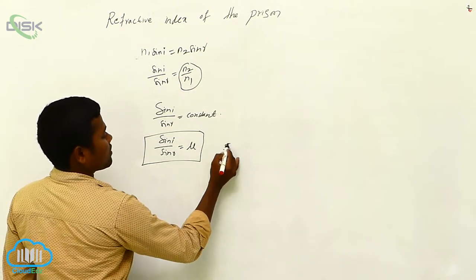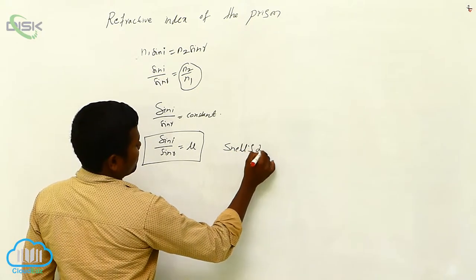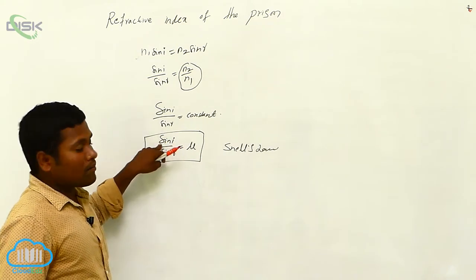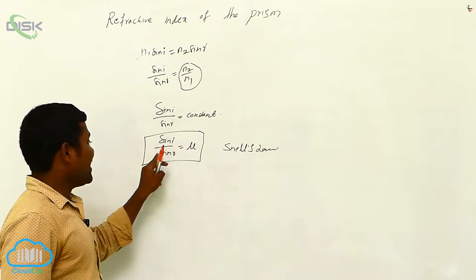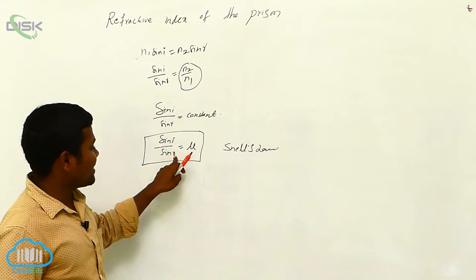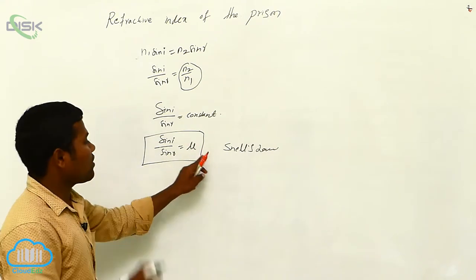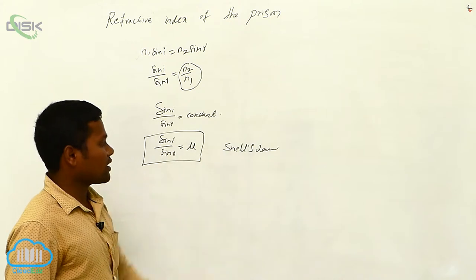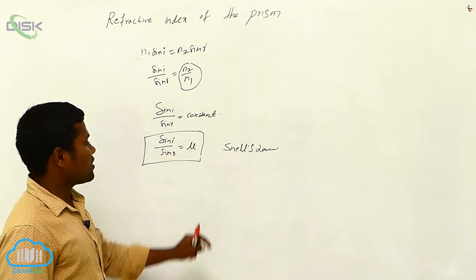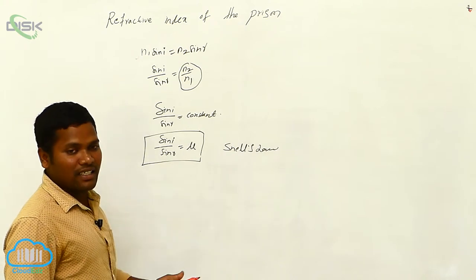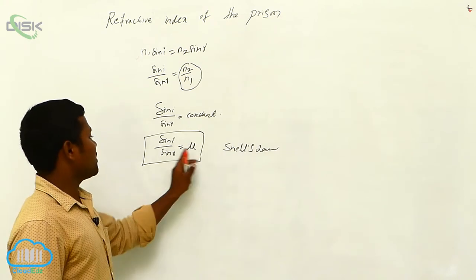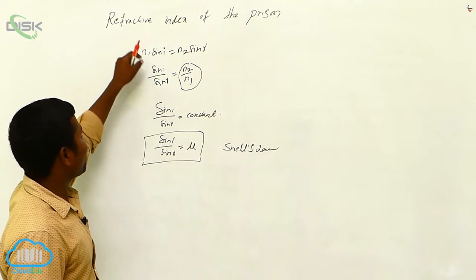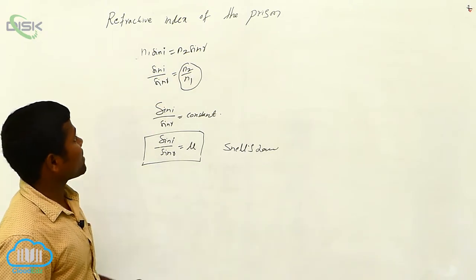Now we can define Snell's law. Simply, the ratio of sin i by sin r is equal to mu — this we are calling the law of Snell, or Snell's law. This is given by the scientist Snell — the law is named after him. This Snell's law is very important for deriving the refractive index of the prism.